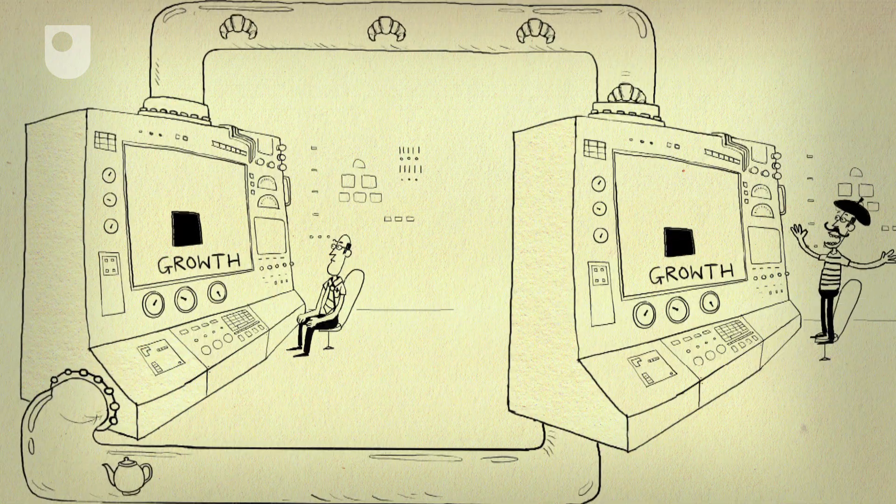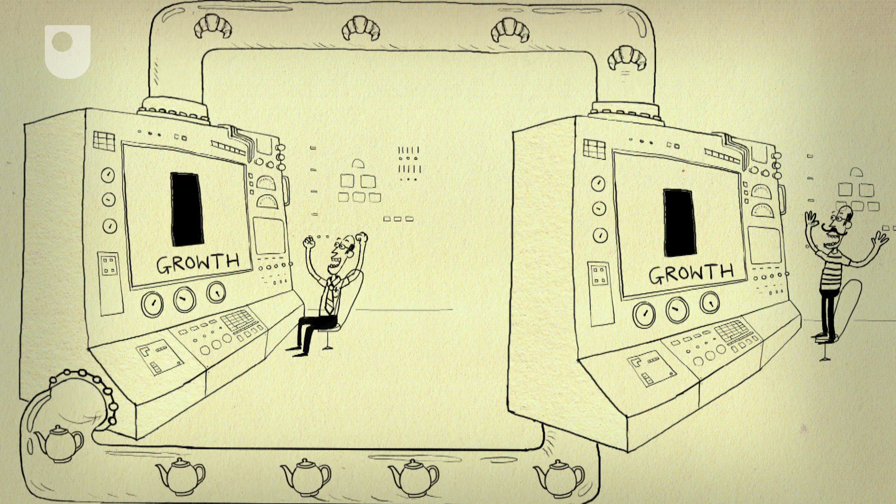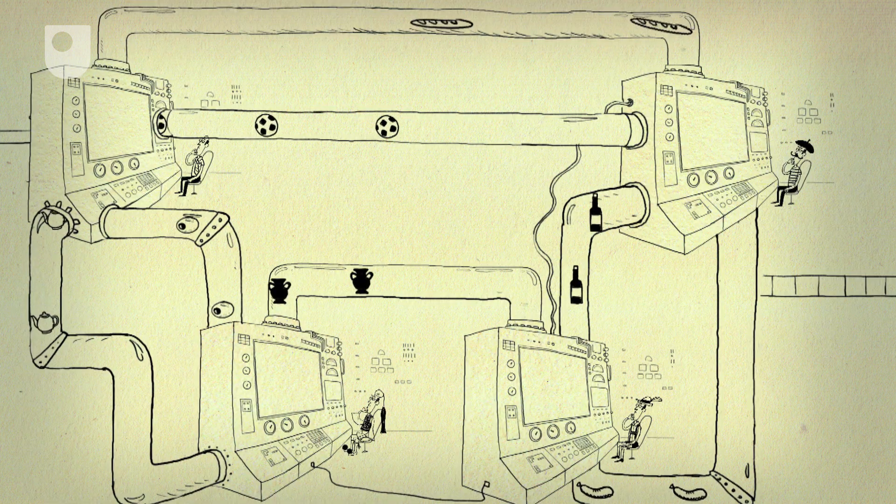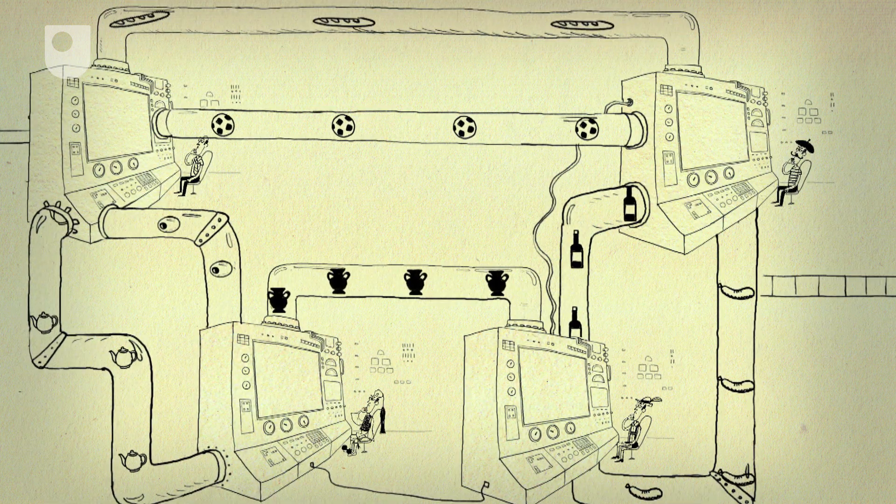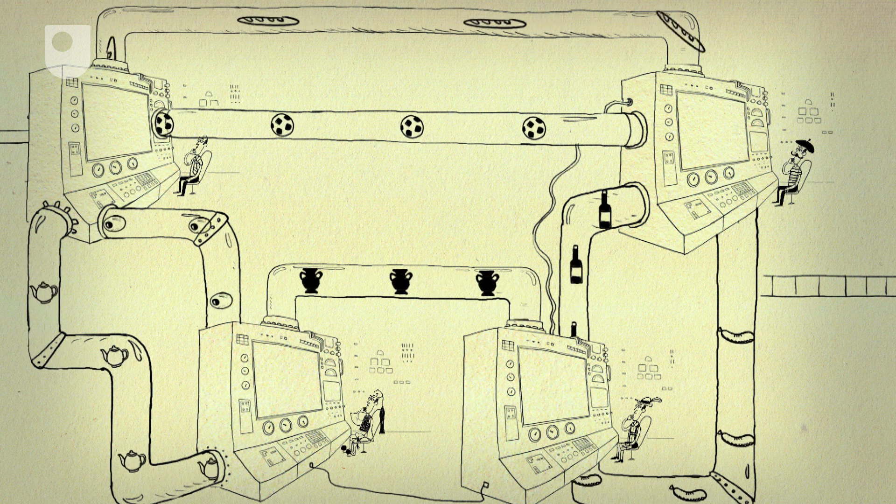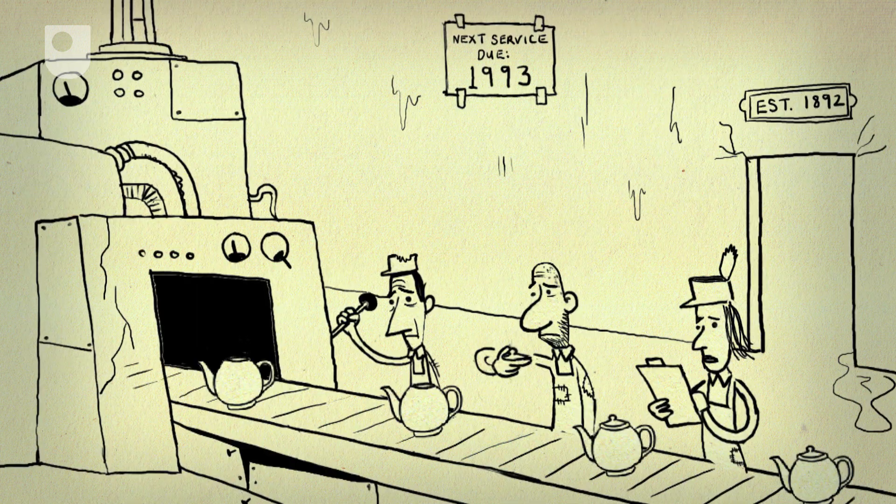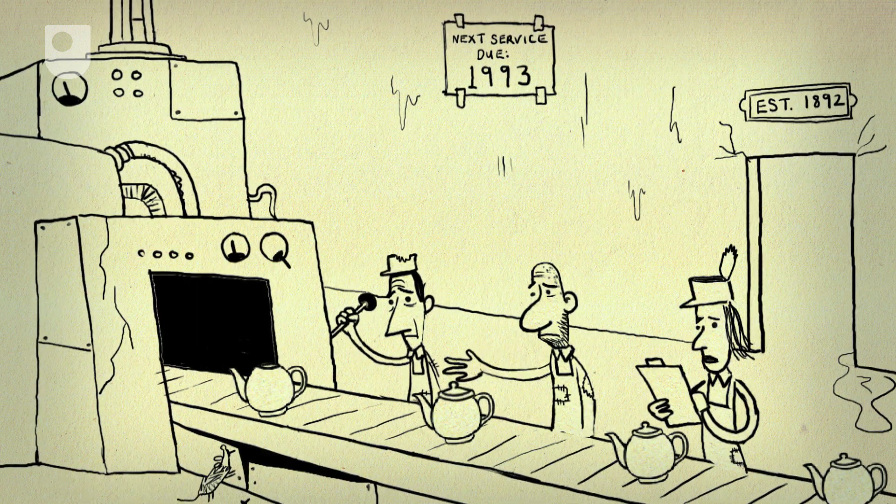By specialising, they can then export these surpluses to each other, and both end up better off. This is the principle of comparative advantage, and it has persuaded many countries to sign up to free trade agreements, but unfortunately it can take a long time for countries to trade their way to prosperity.